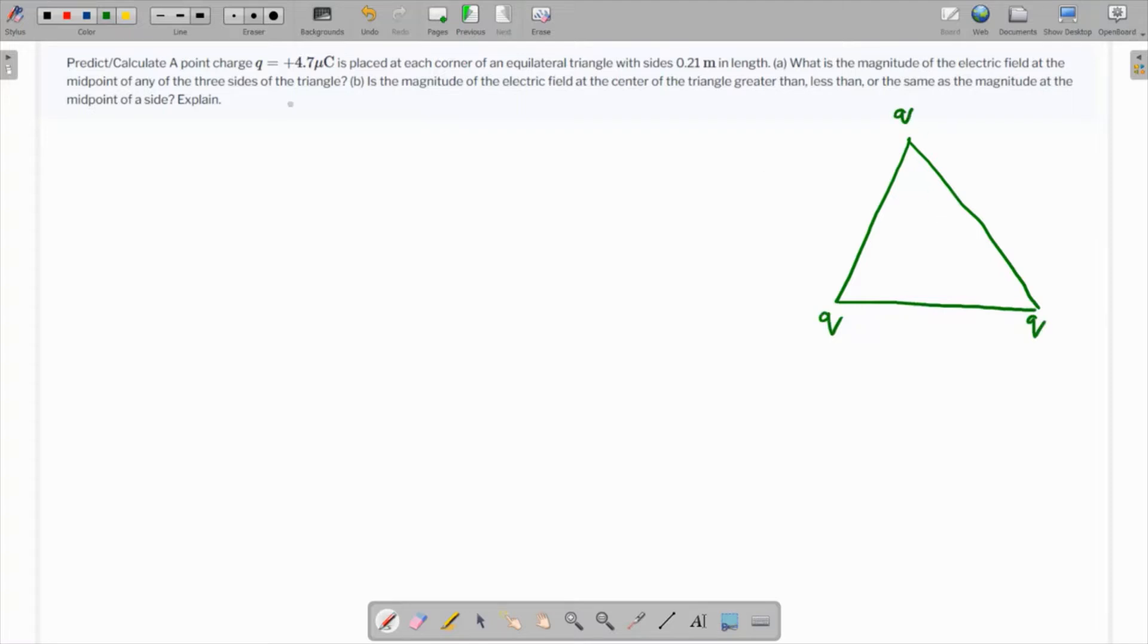Remember the magnitude of the electric field at the midpoint of any three sides of a triangle. Let's say that we have to find the electric field over here. So we know that the electric field due to these two is going to cancel out each other because they are of the same magnitude and this is the midpoint, so these two distances are same.